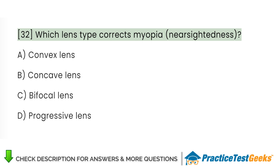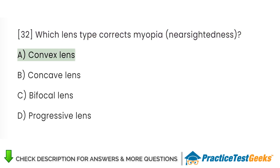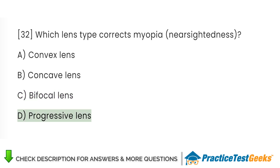Which lens type corrects myopia (nearsightedness)? A. Convex lens. B. Concave lens. C. Bifocal lens. D. Progressive lens.